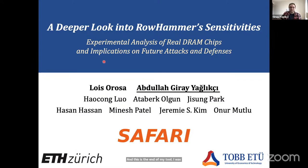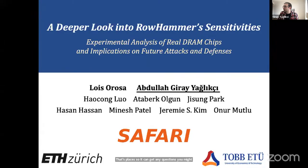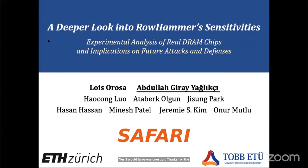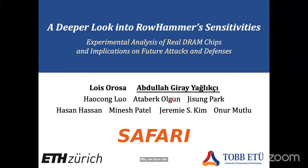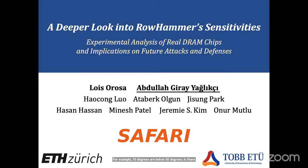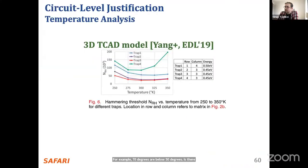That's the end of my talk — I was shooting for 40 minutes and it's been one hour, so I apologize. I can take any questions. One question from the audience: why do we have this vulnerable temperature range? Why can't there be bit flips above 70°C or below 50°C? Is there any intuition about that? The root cause is not very obvious to me actually.